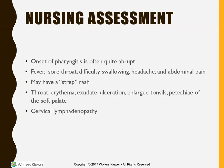When assessing for pharyngitis, check the onset — it often comes on abruptly. Patients usually have fever, sore throat, difficulty swallowing, headache, or abdominal pain. They may also have the strep rash, which is a fine rash on the extremities and trunk. The throat will be very erythematous with exudate, ulcerations, possibly enlarged tonsils, and petechiae on the soft palate.